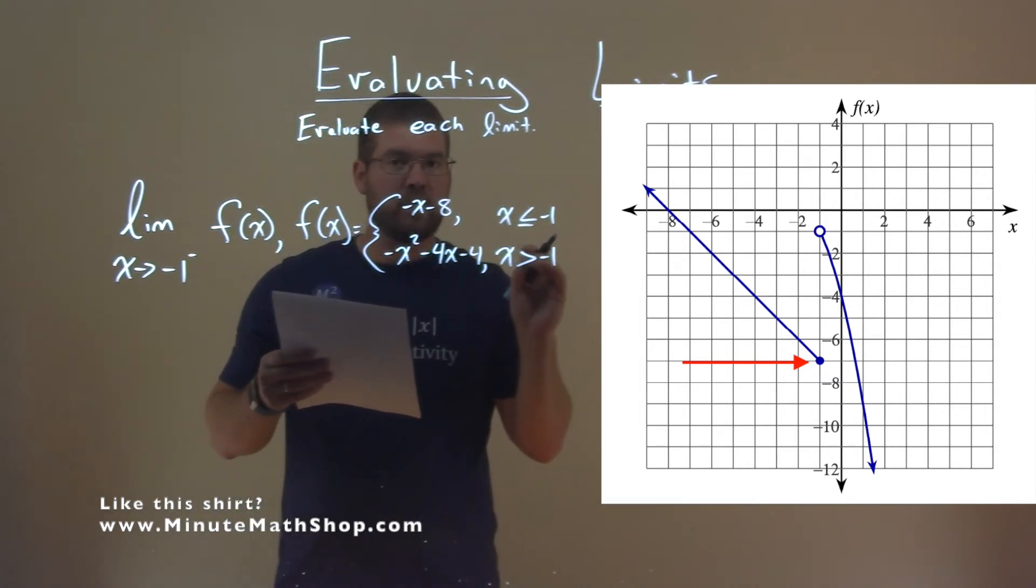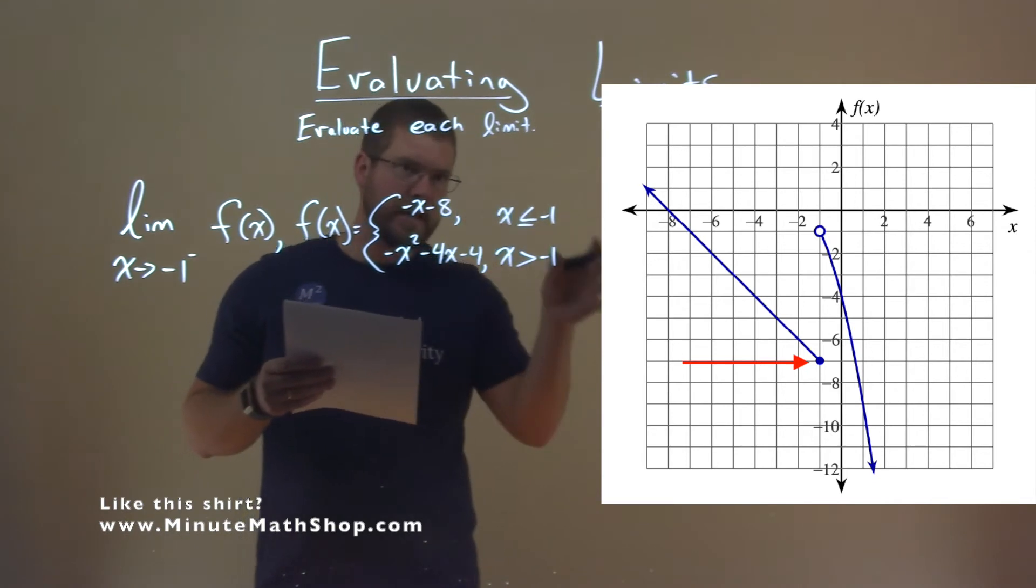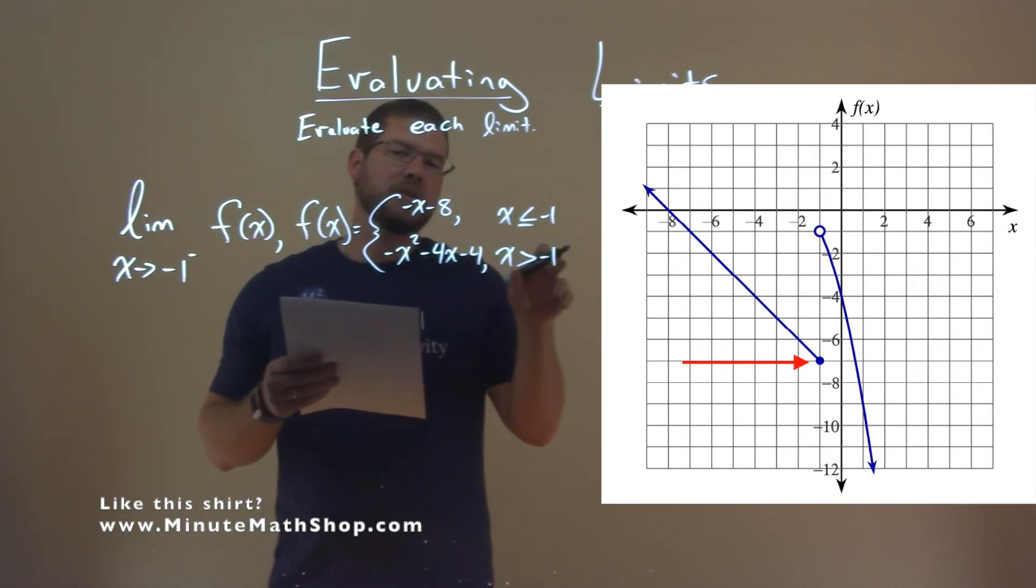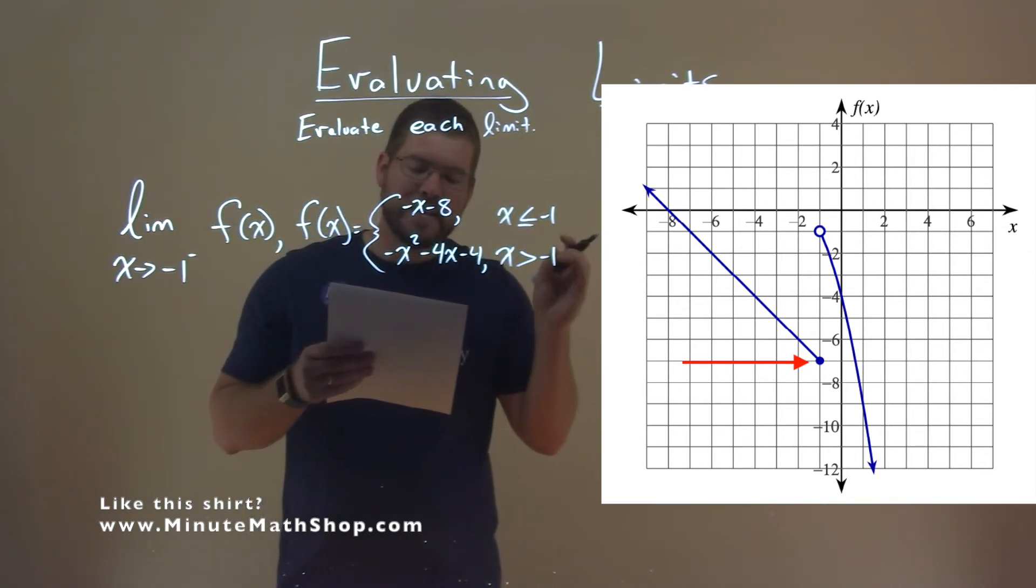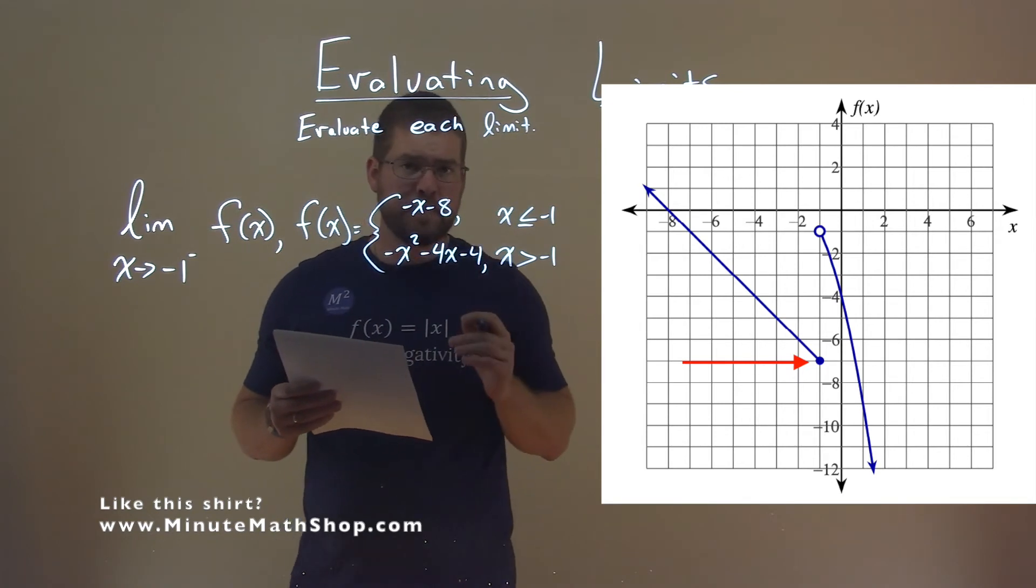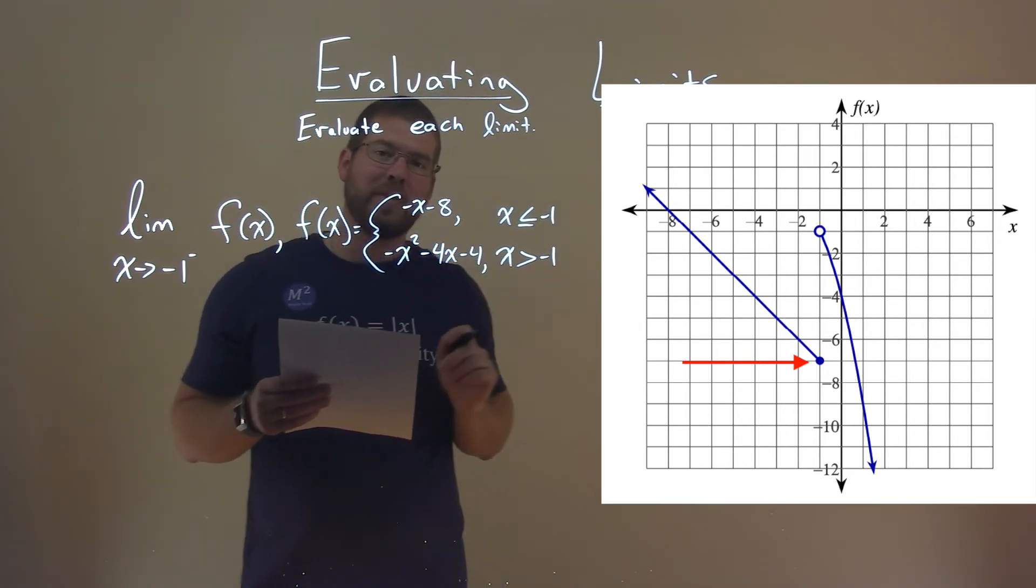And so when x is negative 1 there, or approaching negative 1 from the left, it's approaching a y value of negative 7. So we see that it's approaching down there to the negative 7.